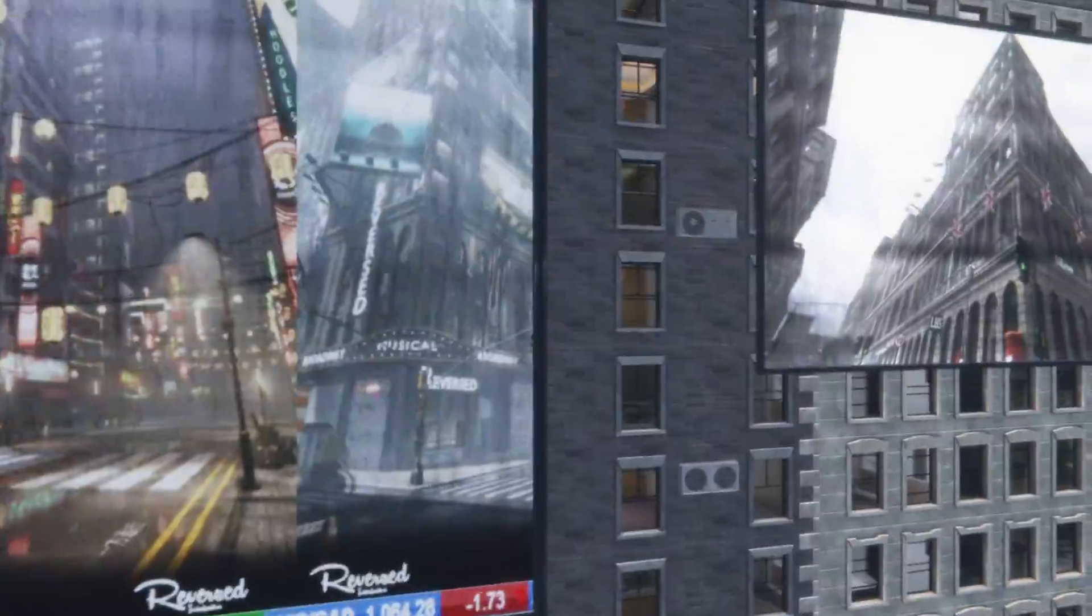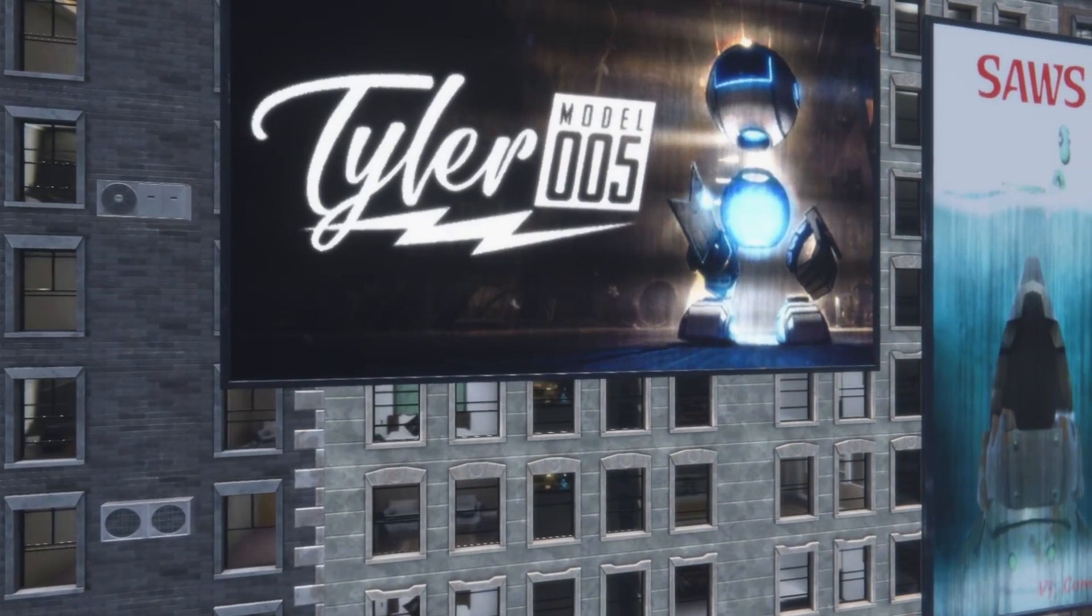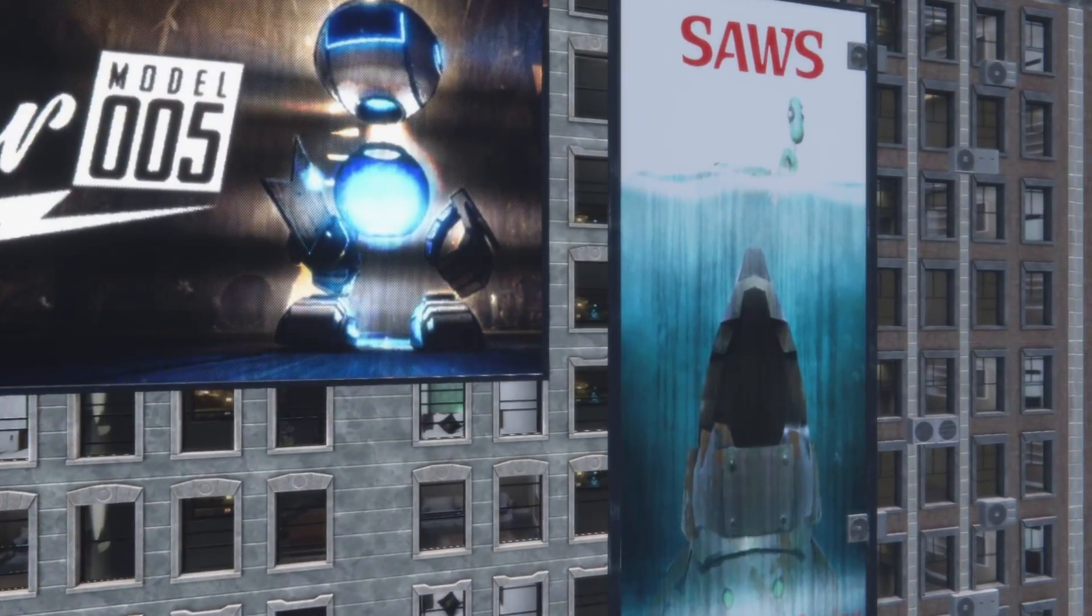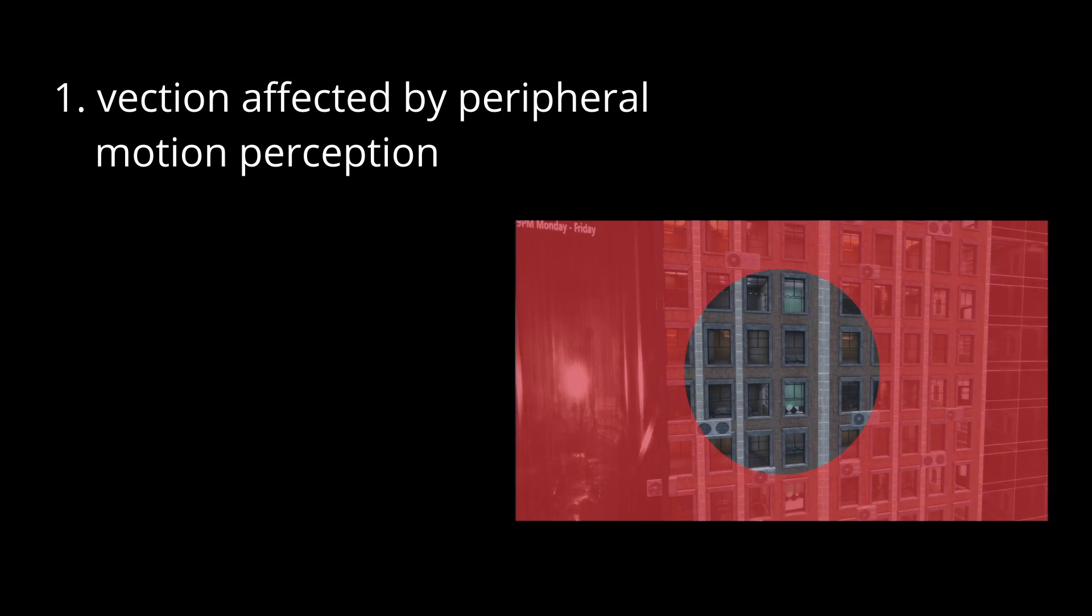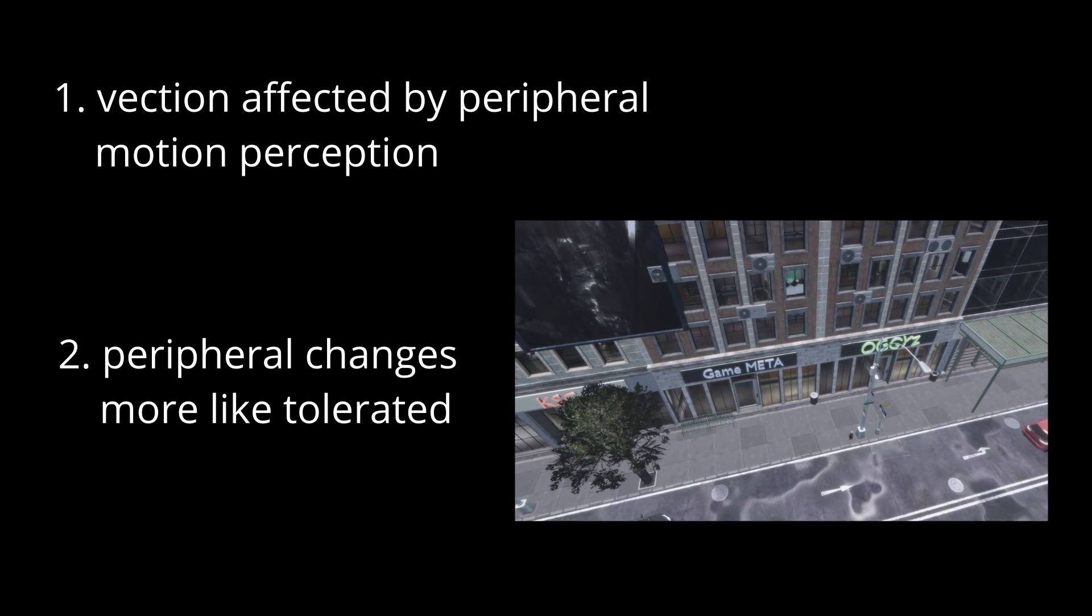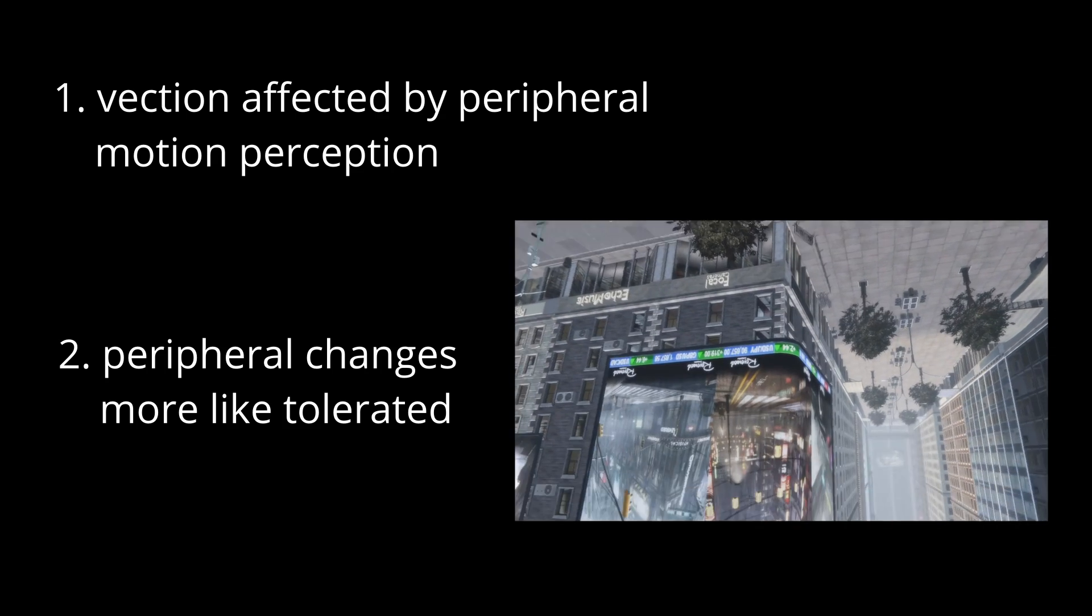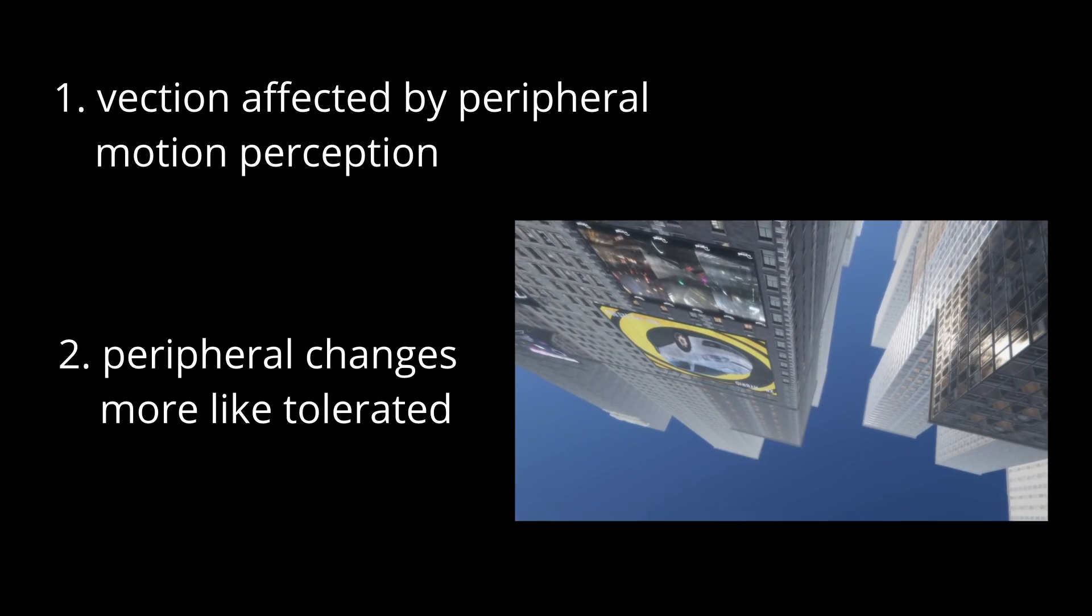We propose a new method for effective cyber sickness reduction that takes advantage of two key observations. One, vection is mostly affected by the motion perception in the periphery. Two, when modifications are applied to the visual scene, humans are much more likely to tolerate them when they are in the periphery.